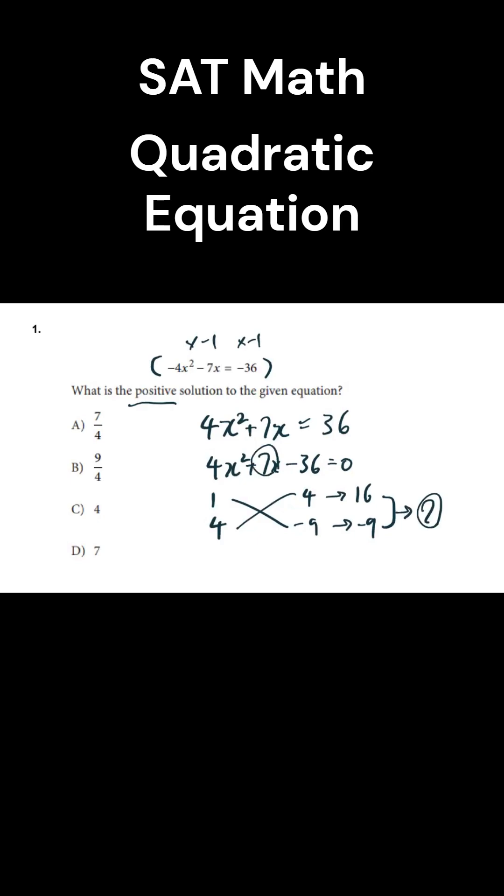And now we can look at these combinations to make the factors. As such, one and four becomes x plus four, and four and negative nine becomes four x minus nine.